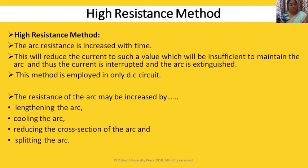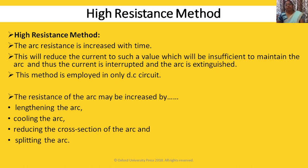In the high resistance method, the arc resistance is increased with time. This will reduce the current to such a value which is insufficient to maintain the arc, and thus the current is interrupted and arc is extinguished. If you increase the resistance, the current will reduce and that is why the arc gets extinguished. This method is employed only in DC circuits, as DC has a constant waveform.